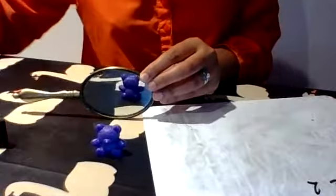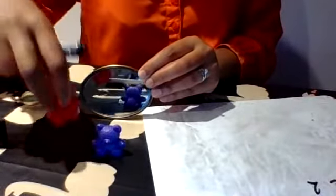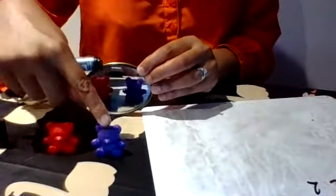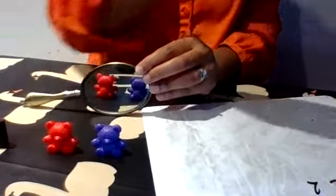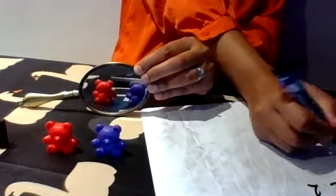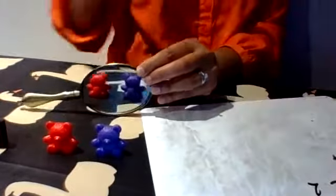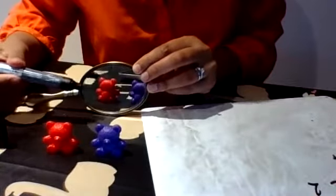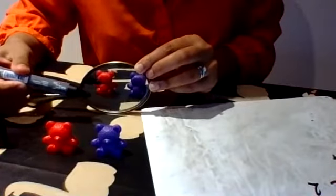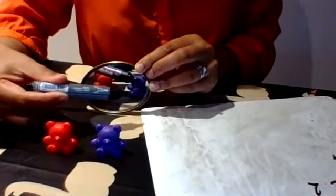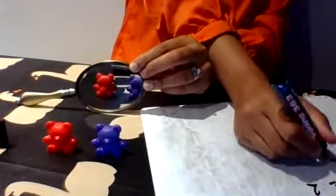Now I am going to add another teddy bear. So I've got one, two teddy bears there. So I'm going to write down the number two and then I'm going to write down the number that I can see in the reflection. How many teddy bears can you see in the mirror? One, two. There are two teddy bears in the mirror.